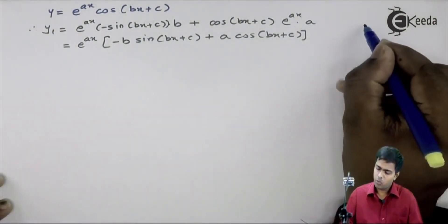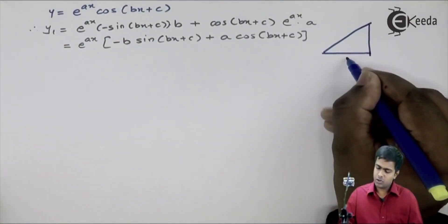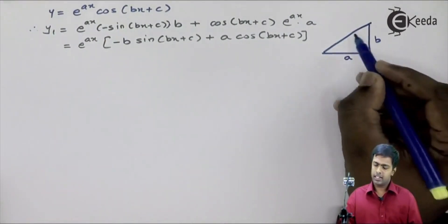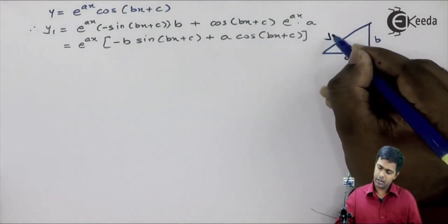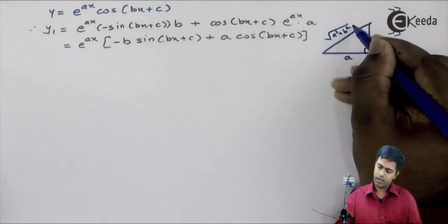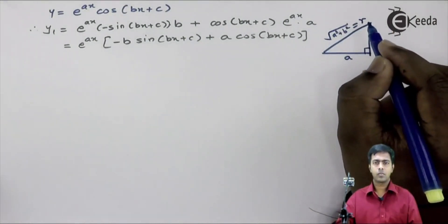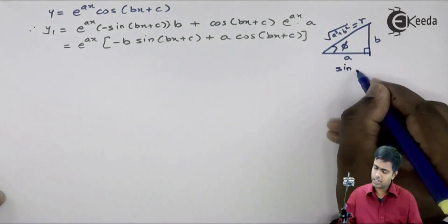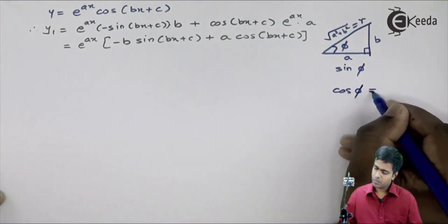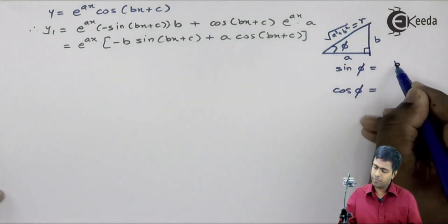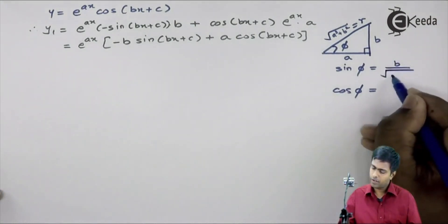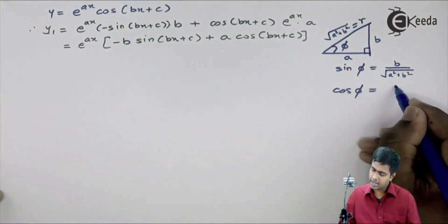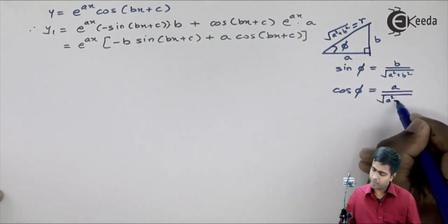I am drawing a right angle triangle. Let us assume one side as a and the other side as b. Since this is a right angle triangle, the hypotenuse is root of a squared plus b squared, which we call r. Let this angle be phi. From here, sin phi is nothing but the opposite side b upon the hypotenuse root of a squared plus b squared, and cos phi is the adjacent side a upon root of a squared plus b squared.